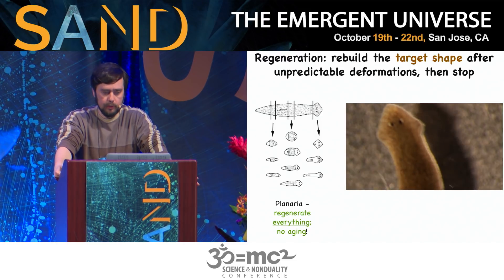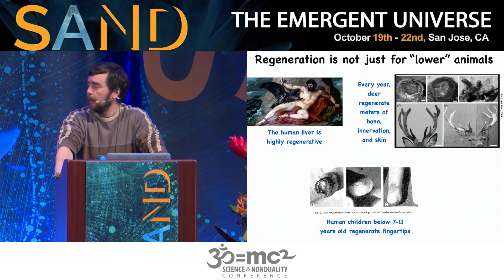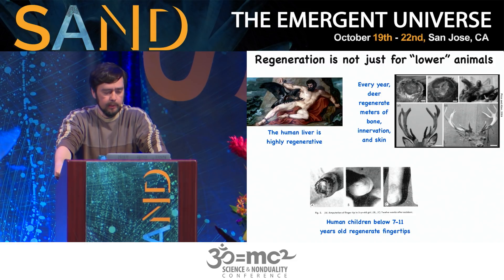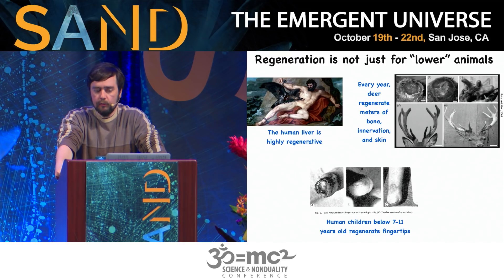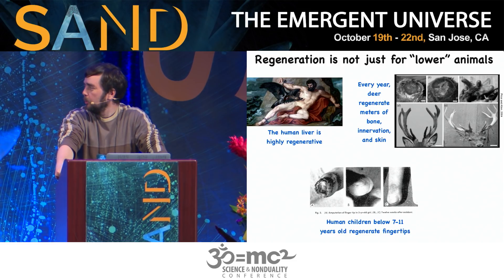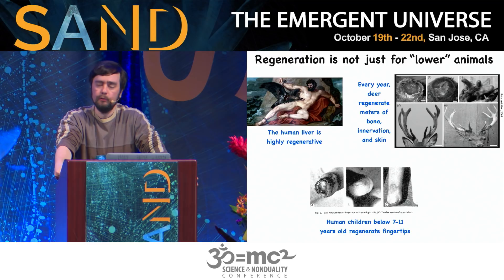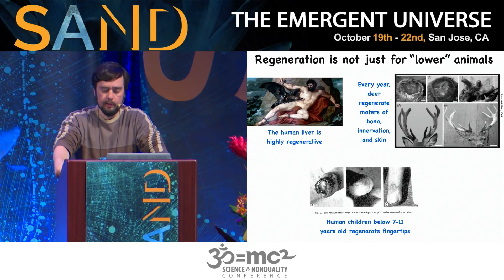Regeneration is not just for lower animals. The human liver is highly regenerative — the Greeks knew that, as you can see from this myth. Deer are an interesting example: every year they shed large amounts of bone and then grow back their antlers, sometimes at over a centimeter of new long bone per day. Antlers are actual long bone with innervation, vasculature, and skin covering them. And human children, usually below age 11, can actually regenerate their fingertips after a clean amputation — just keep it clean above the last knuckle and it grows back. This ability is lost with age.